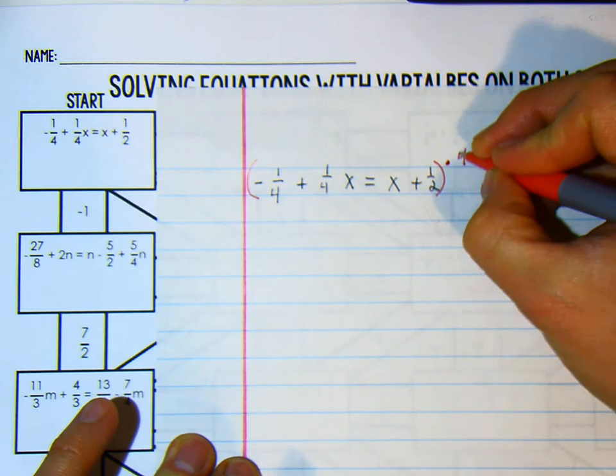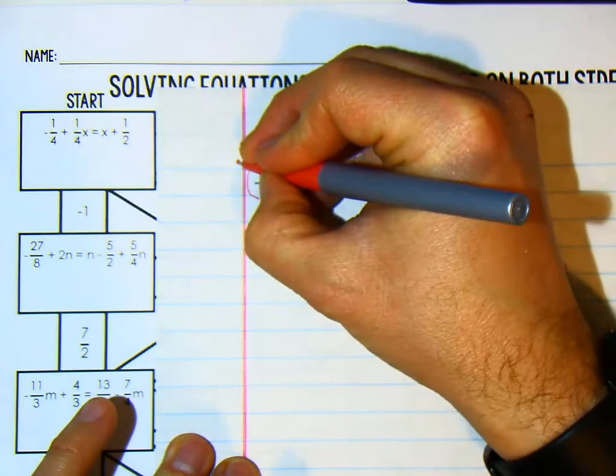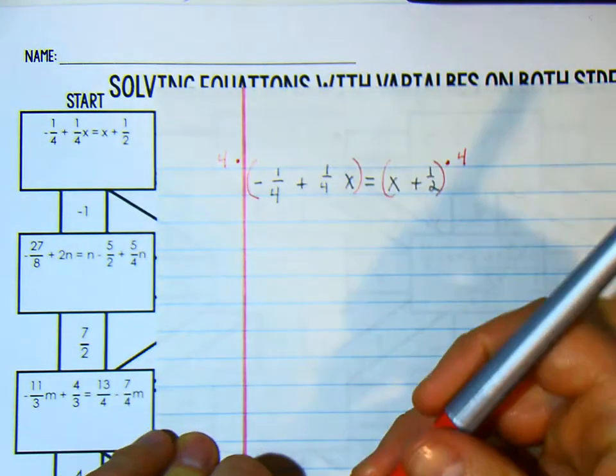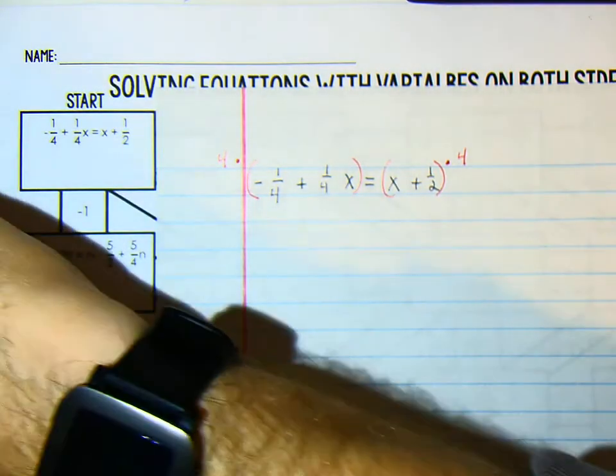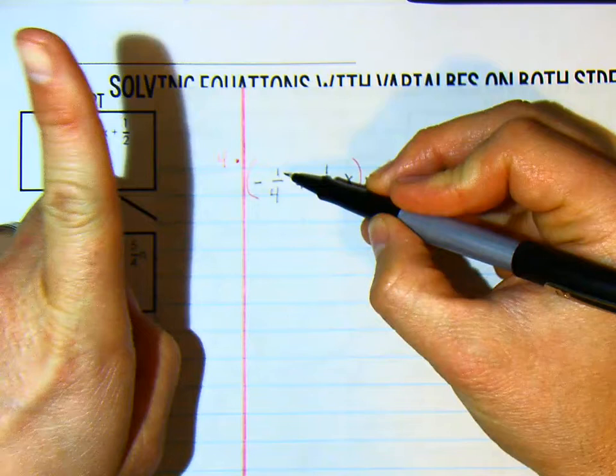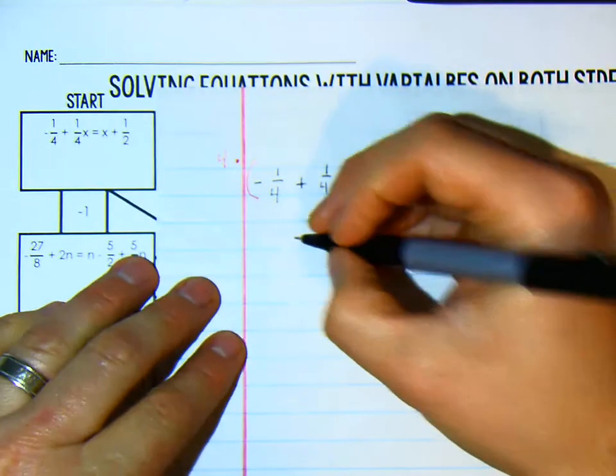So if I multiply by 4 on one side, I have to multiply by 4 on the other side. I like to use different colors so that you can see the work as I am going through this. So 4 times 1/4 is 1, but it is a negative, so it is a negative 1.